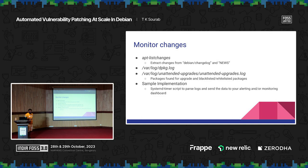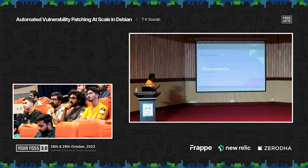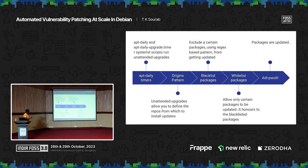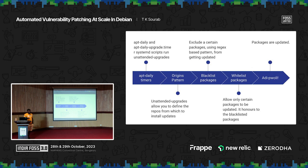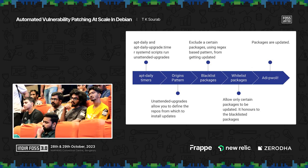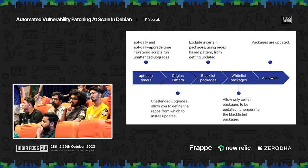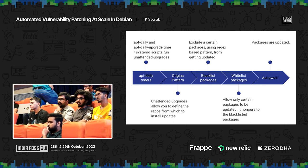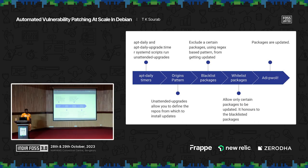The apt-daily timer is just a cron job essentially — it calls the unattended-upgrade command. This is helpful if you have a systemd-based system, but without that it also works very well. For example, I manually configured it so I can see what changes it is going to make in the system — I created a script, the cron job calls that script, and I can see the output: 'these are the changes that are going to happen, should I go ahead and do it?' That level of automation is very easy without systemd at all.